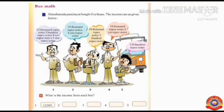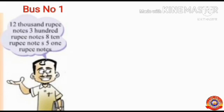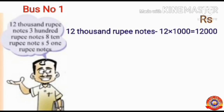Let's do the next activity: Bus Math. Maridamala Panchayat bought 5 buses. The incomes are as given below. Here we have to find out the income from each bus. Bus number 1 got 12 one-thousand rupee notes, 3 hundred rupee notes, 8 ten rupee notes, and 5 one-rupee notes. Let's find out the income from bus number 1. For 12 one-thousand rupee notes: 12 × 1,000 = 12,000.